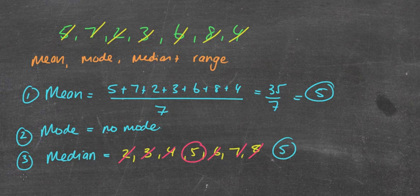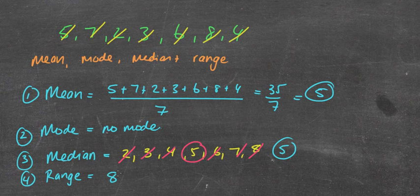And then the last one, which is the range. That's my highest minus lowest, so in this case it's 8 subtract 2, which is equal to 6.